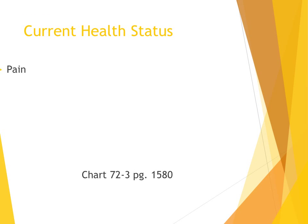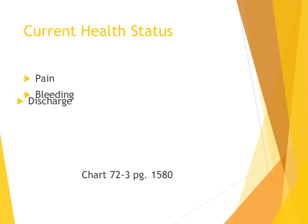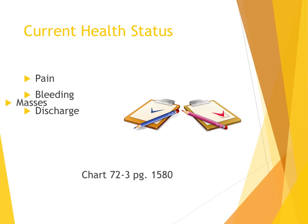On page 1580 of your Iggy book, chart 72-3 provides examples of questions the RN may ask the patient when assessing for reproductive health problems. The key components are pain, bleeding, discharge, and/or masses.